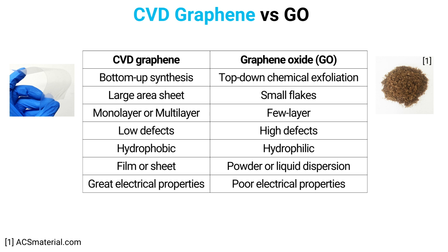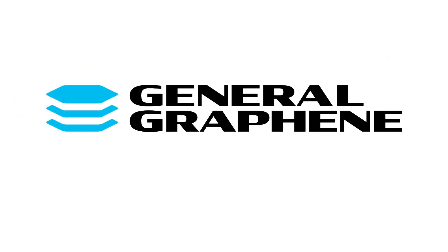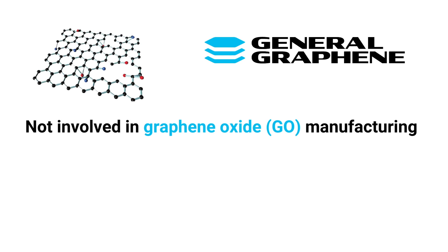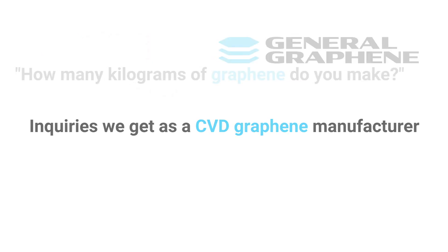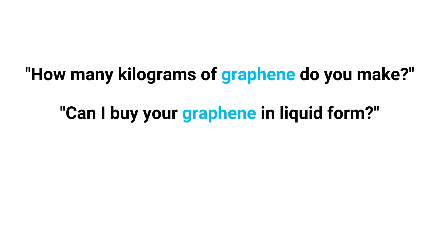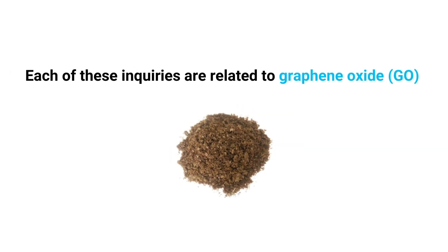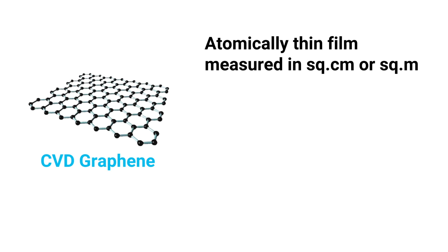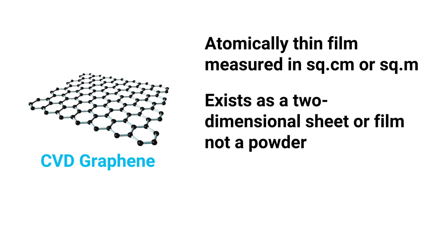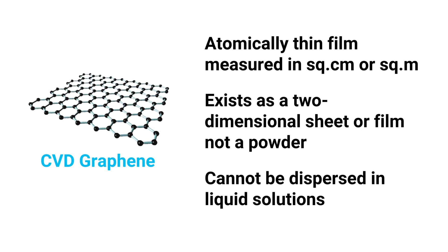At General Graphene, we do not engage in any graphene oxide manufacturing and are solely focused on synthesizing and transferring CVD graphene materials at industrial scale. We often receive questions about buying graphene by the kilogram, in liquid form, or adding it to paint — but each of these questions are really about graphene oxide. CVD graphene by itself weighs less than a milligram per square meter and is best measured by surface area in square centimeters or square meters. Importantly, CVD graphene does not exist as a powder and cannot be dispersed in or added to liquids or paint.